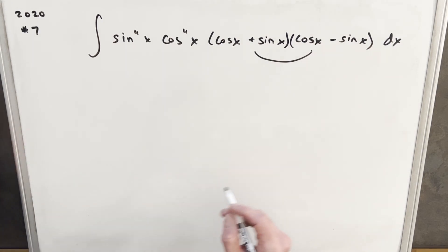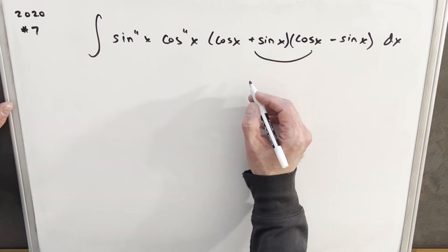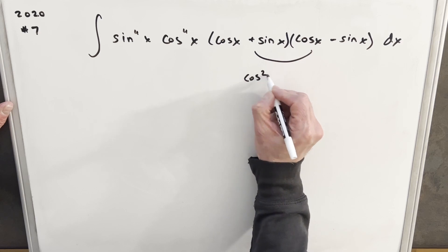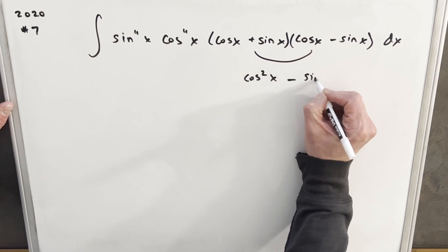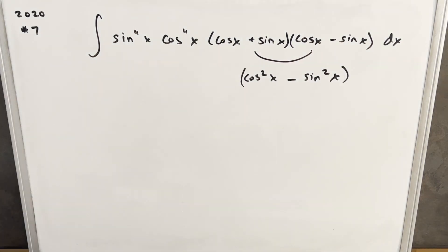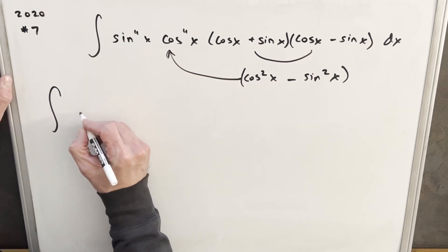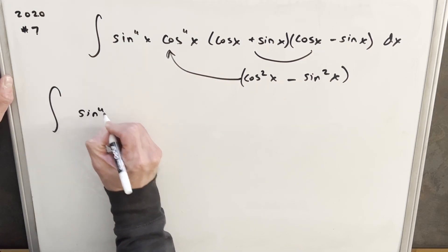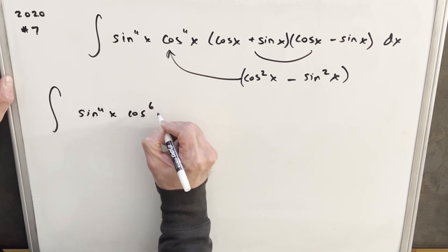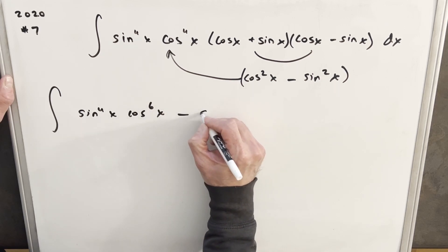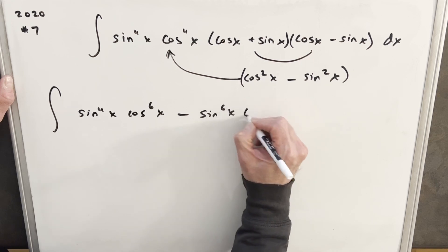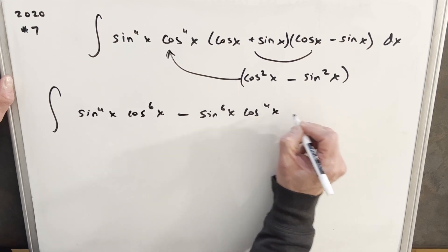To start, I'm just going to multiply these two together, and we'll have a difference of two squares, because we'll see that we're going to have cosine squared x minus sin squared x. And then what I'll do is just take this and multiply it into this expression. So we're going to have for our integral, we'll have sin to the fourth x cos to the sixth x minus sin to the sixth x cos to the fourth x dx.